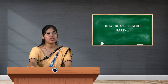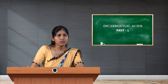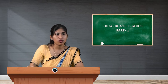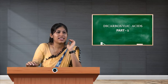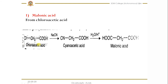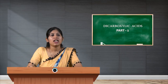We can prepare malonic acid from chloroacetic acid. When chloroacetic acid is treated with sodium cyanide, the cyano group replaces the chloro group, giving cyanoacetic acid. The cyanoacetic acid then undergoes hydrolysis of the cyano group, which converts it to a carboxylic group, giving malonic acid. That is about the preparation of malonic acid.